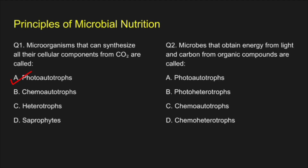Question 2. Microbes that obtain energy from light and carbon from organic compounds are called — A. Photoautotrophs, B. Photoheterotrophs, C. Chemoautotrophs, D. Chemoheterotrophs. The correct answer is Photoheterotrophs.